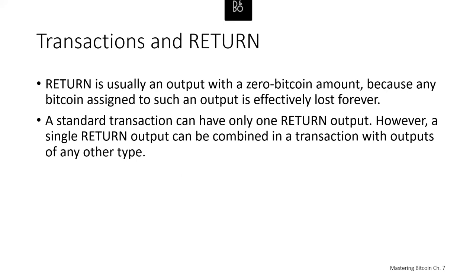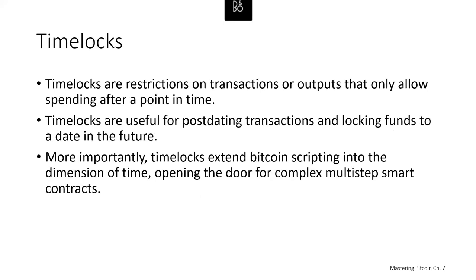Time locks are restrictions on transactions or outputs that only allow spending after a particular point in time. Bitcoin has had a transaction-level time lock feature for a long time, implemented by the nLockTime field in a transaction. UTXO-level time lock features include OP_CHECKLOCKTIMEVERIFY (CLTV) and OP_CHECKSEQUENCEVERIFY (CSV). Time locks are useful for post-dating transactions and locking funds to a date in the future, extending Bitcoin scripting into the dimension of time and opening the door for complex, multi-step smart contracts.